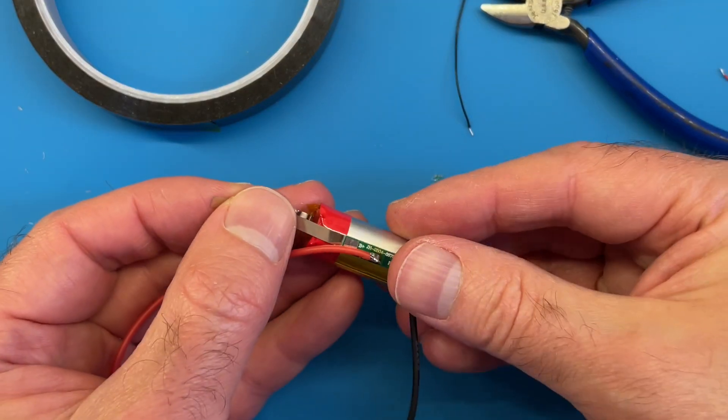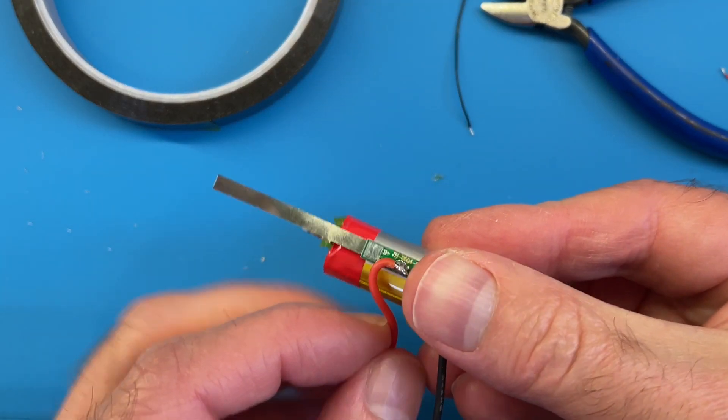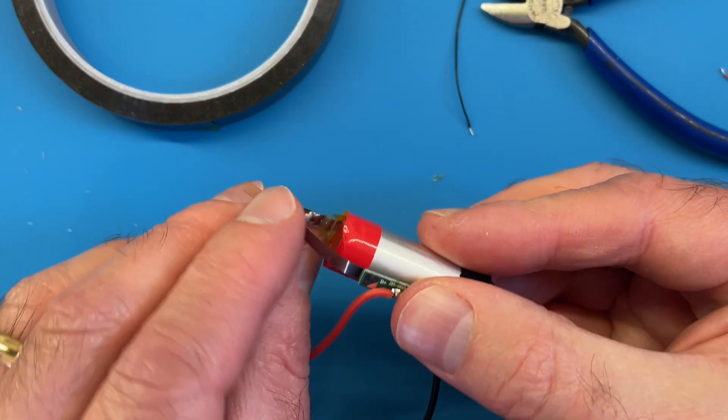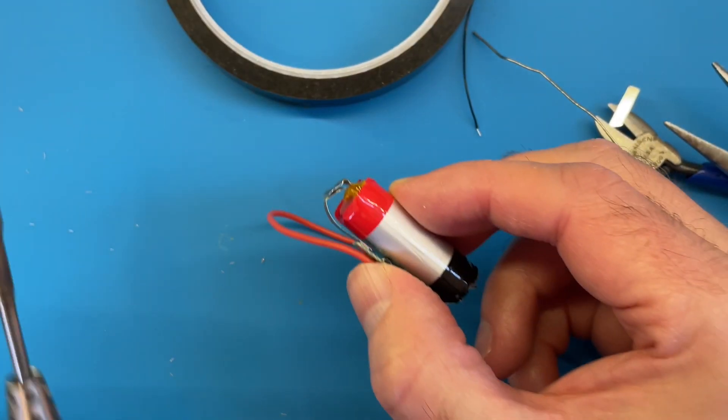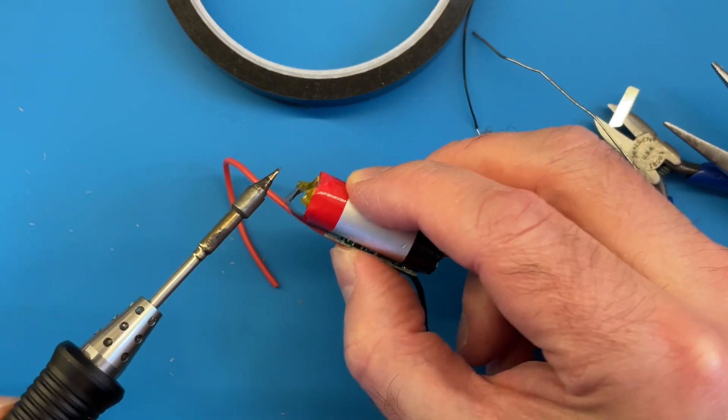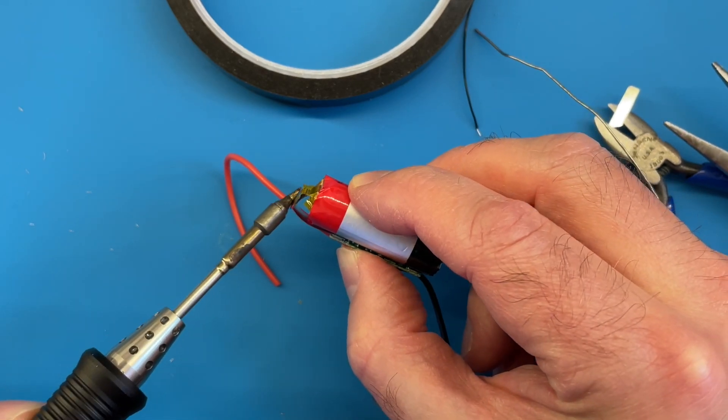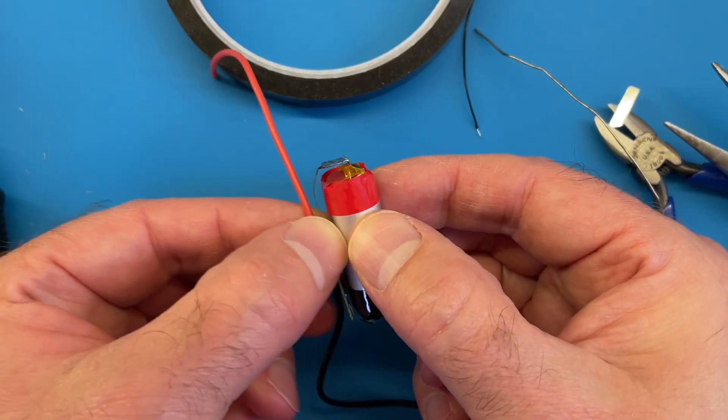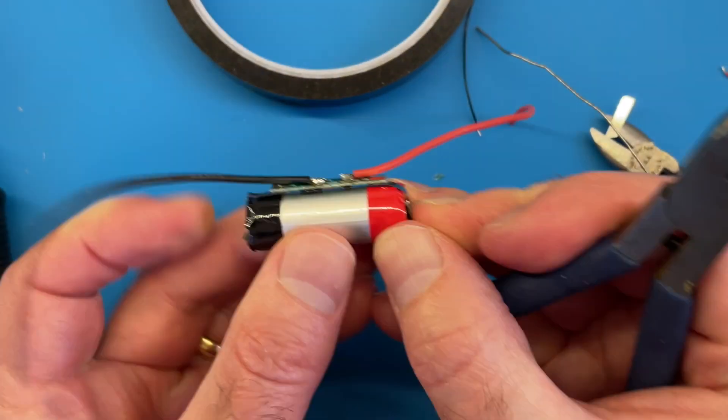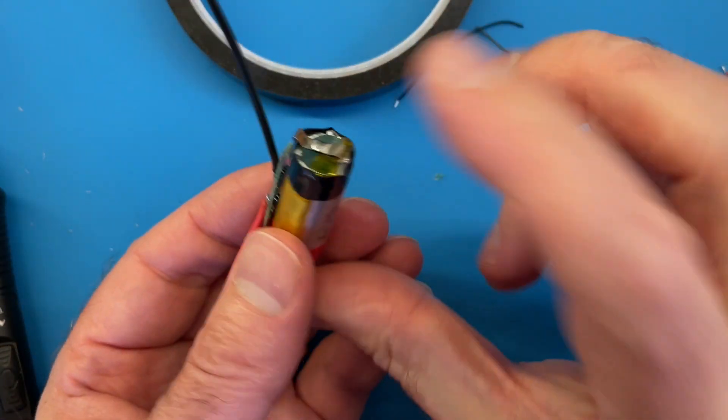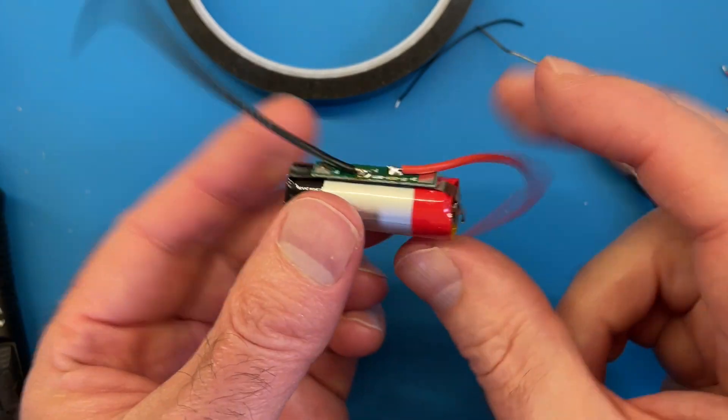Okay, now we just need to do the plus. So battery plus to positive. Okay, so if we just heat this up it should weld together. I think that's pretty good. So all we need to do now is wrap this up with some kapton tape. And we've got a nice little battery.